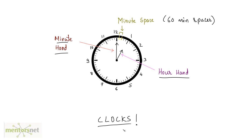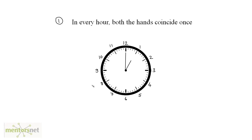Let us look at various important points regarding clocks. The first point: in every hour, both the hands coincide once. One hour means 60 minutes, and in 60 minutes the minute hand completes one full revolution. When it completes one full revolution, it overlaps the hour hand — the short hand. That's what this point says: the minute hand overlaps the hour hand once every hour.